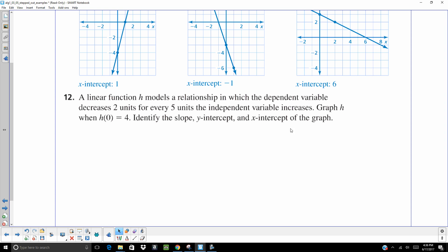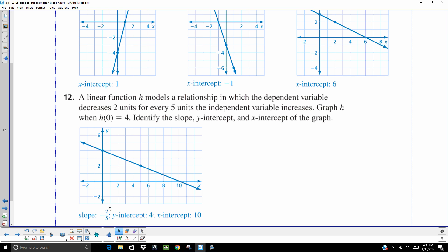On number 12, it's like the previous one we just did. Our slope is negative 2 fifths because the dependent variable decreases. So think of that as negative 2. For every 5 units, the independent variable increases. That would be your x values, which is 5. So negative 2 over 5. And they're also telling us h of 0 is 4. That's our y-intercept. So put a dot at 0, 4. And then you're going to go down 2. Write 5. Put another dot. Use a straight edge. Draw your line. You can do that a couple times. Down 2. Write 5. Put a dot. And that gives you your x-intercept of 10.